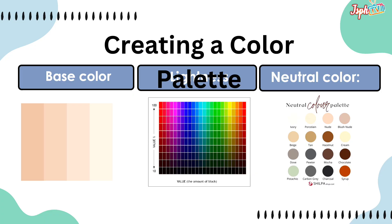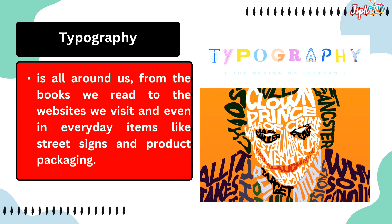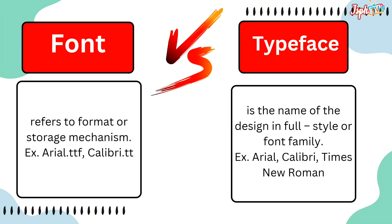Creating a color palette involves a base color, lightness, and neutral color. Next, typography. Typography is all around us, from the books we read, to the websites we visit, and even in everyday items like street signs and product packaging. Font versus typeface: font refers to the format or storage mechanism, and typeface is the name of the design — its full style or font family.